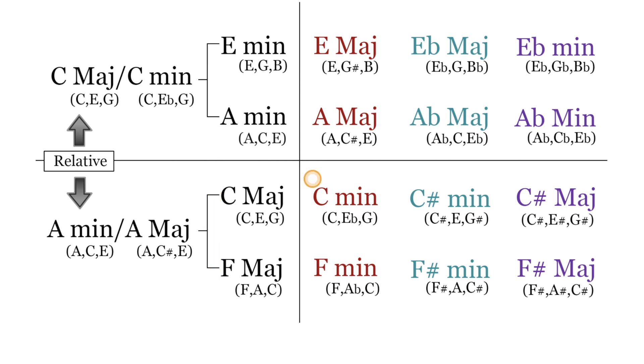The three chromatic median chords are C minor, C sharp minor, and C sharp major. And the three chromatic submediant chords are F minor, F sharp minor, and F sharp major.